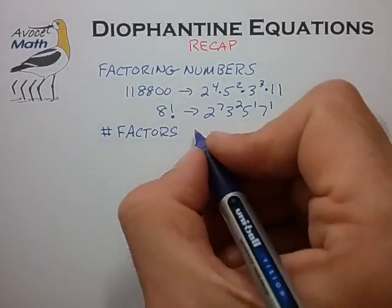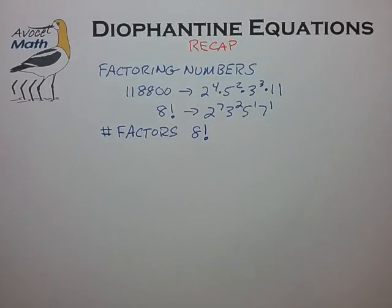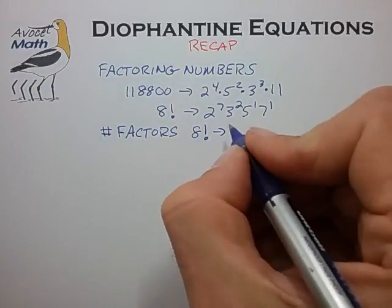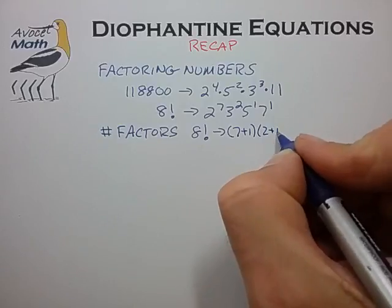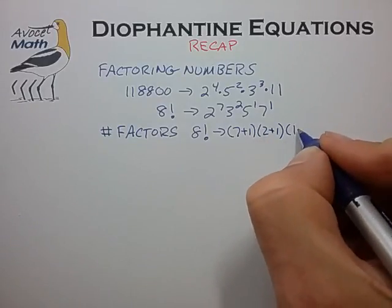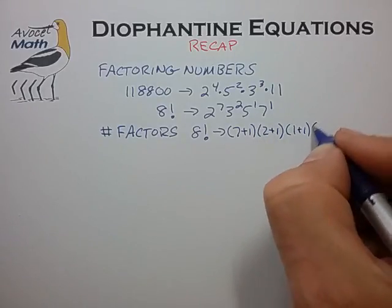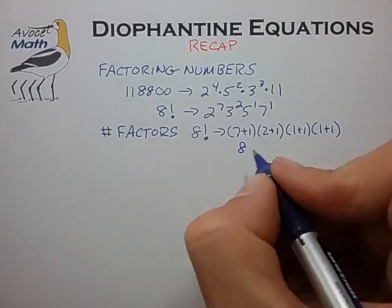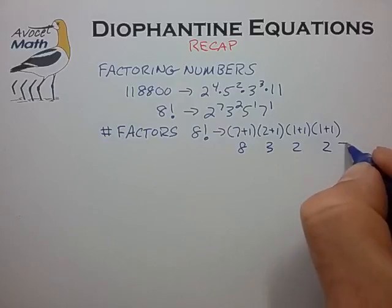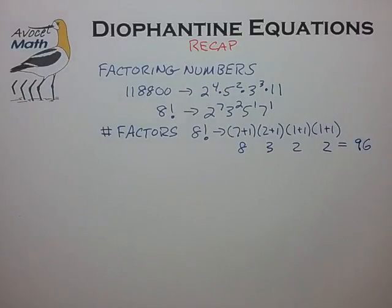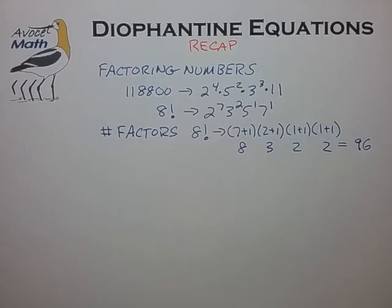So for example, for 8 factorial, we know that the number of factors is given by (7+1) times (2+1) times (1+1) times (1+1). That's 8, 3, 2, and 2. You multiply that all together and that's 96 individual factors that divide evenly into 8 factorial, including 1 as well as 8 factorial itself.